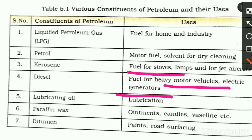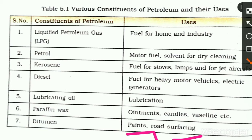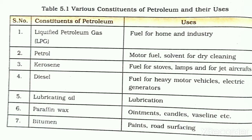The sixth product is paraffin wax, which is used to make ointments, candles, vaseline, etc. The seventh product is bitumen, which is used for making paints and road surfacing.